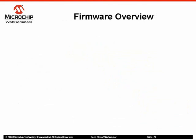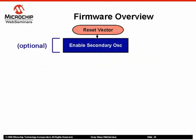Now let's take a look at how firmware can be written to work with DeepSleep. When the microcontroller first powers on or wakes up from DeepSleep, it will start executing code from the reset vector. If the RTCC is using the secondary oscillator to keep track of time, the secondary oscillator should be enabled before clearing the DeepSleep release bit. This allows the RTCC to continue operating continuously without losing time. DeepSleep hardware will keep the RTCC and secondary oscillator running throughout DeepSleep and wakeup.